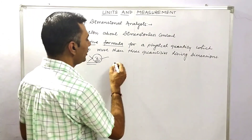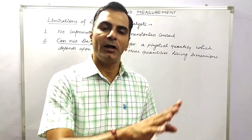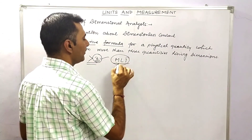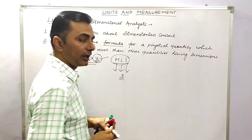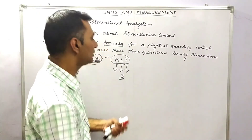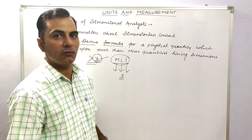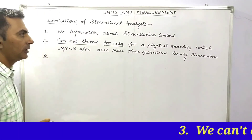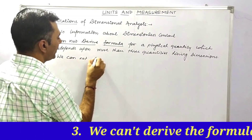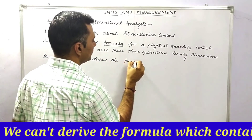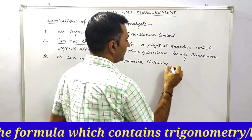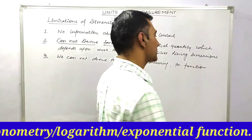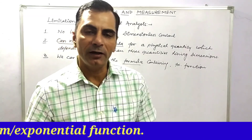When a quantity depends on more than three dimensional quantities, we get more than three unknowns — four, five, six, and so on — but we only have three equations from equating the powers of M, L, and T. So we cannot solve for all the unknowns. Third: we cannot derive the formula containing trigonometric functions, logarithm, or exponential functions.